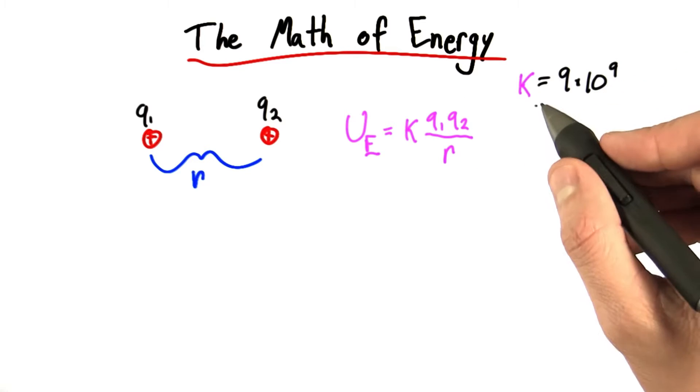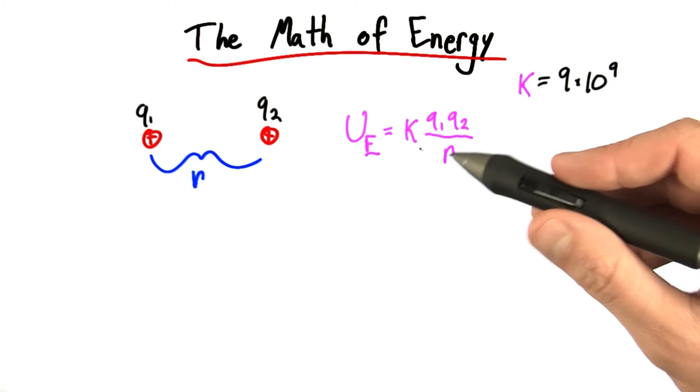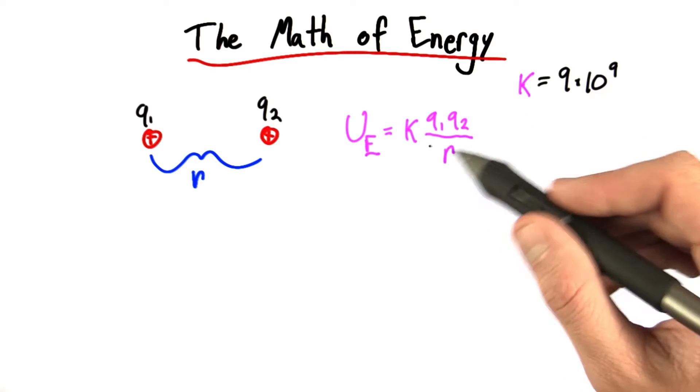Now k is just a constant. Its value is 9 times 10 to the 9th. And maybe you can tell me by doing your dimensional analysis skills what the units are.